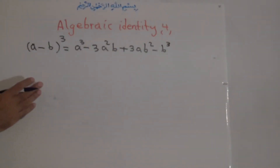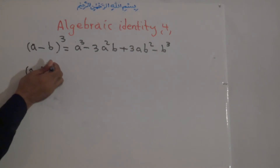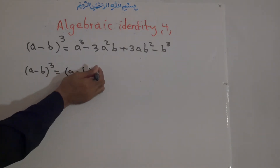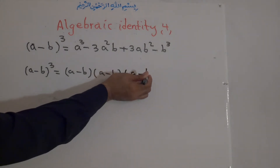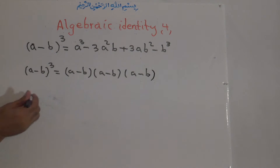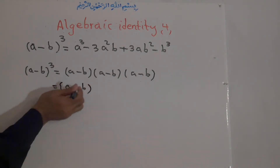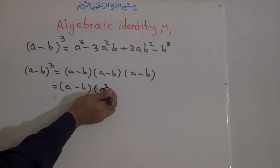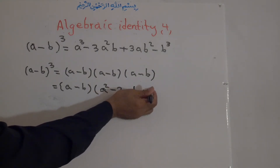How can we find this identity? (a minus b) to the power of 3 means a minus b times a minus b times a minus b. This equals a minus b times — and we know from Identity number 2 — (a minus b) times (a minus b) is equal to a squared minus 2ab plus b squared.